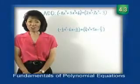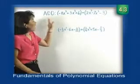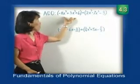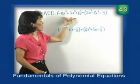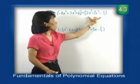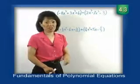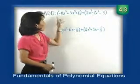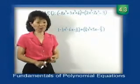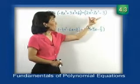Let's look at our first two polynomials. We're going to add this first polynomial: negative 8x to the third, plus 3x squared, plus 6, plus our second polynomial: 2x to the third, minus 7x squared, minus 3. Remember, when a polynomial has three terms, it's called a trinomial. So we're adding this trinomial with our second trinomial.